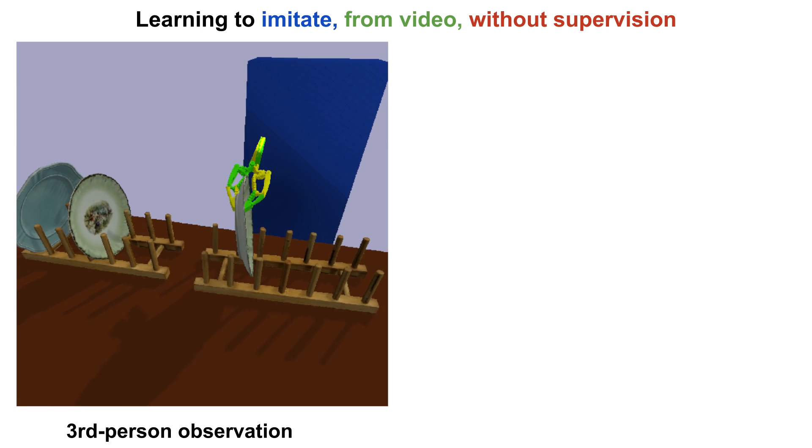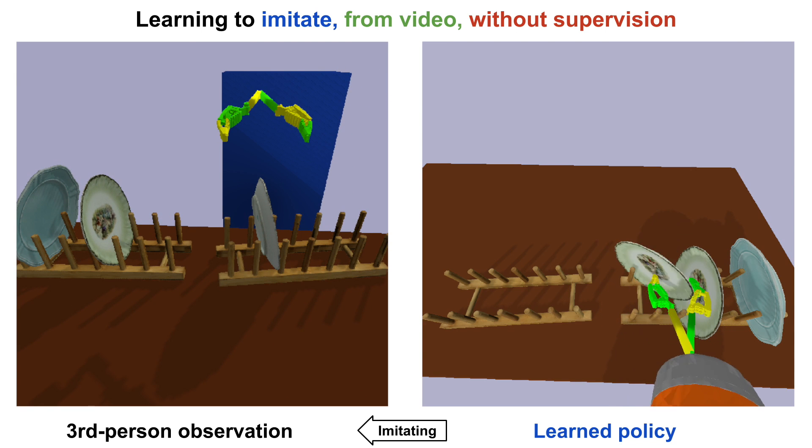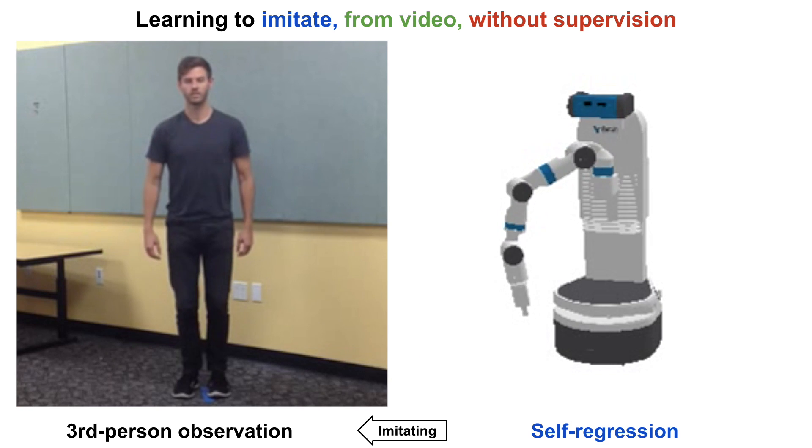We demonstrate the same approach on a diverse set of tasks with real and simulated robots: a pouring task, a dish placement task, and a pose imitation task.